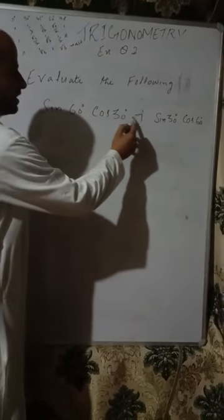The first part is sin 60 degree cos 30 degree plus sin 30 degree cos 60 degree. We use the trigonometry ratios of specific angles. You can create a table to easily solve these questions. Sin 0 degree is 0, sin 30 degree is 1/2, sin 45 degree is 1/√2, sin 60 degree is √3/2, and sin 90 degree is 1.